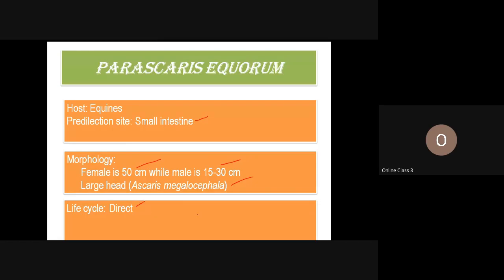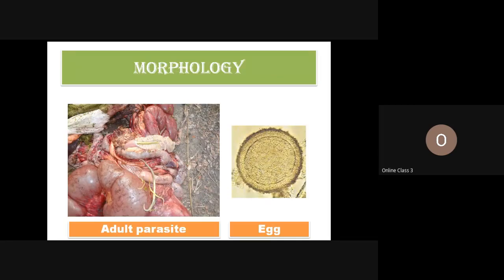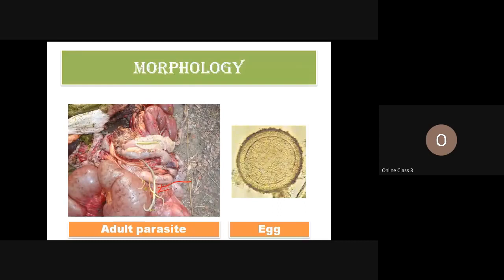Their life cycle is a very simple, direct life cycle. Here is a picture from a postmortem of a donkey showing many ascarids in the small intestine. These worms are fairly large — around 40 to 45 centimeters long. The larger ones are females and the smaller ones are males.